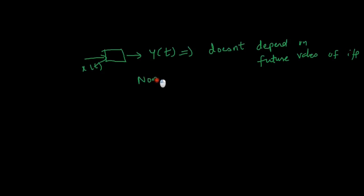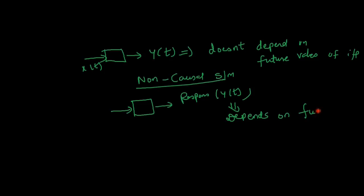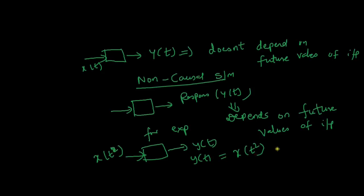So what is a non-causal system? A non-causal system is one whose response y of t depends on future values of input. For example, if the signal is x of t squared and y of t is x of t squared, then this system is called non-causal system, because the response at the present time depends on the future value of input.